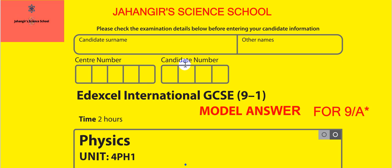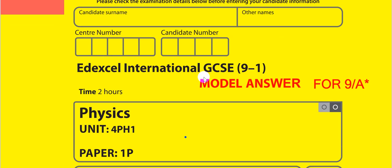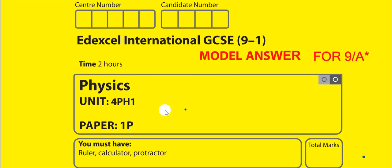Welcome to my channel, Jahangir Sciences School. Edexcel International GCSE 9 to 1, model answer for 9 or A star. I am Jahangir Alam, I am a physics teacher. Unit 4PH1, paper 1.